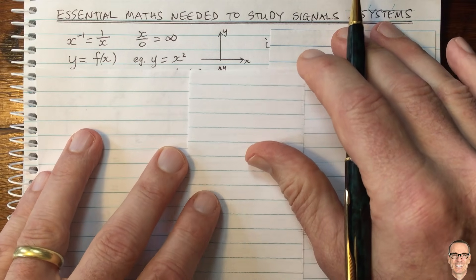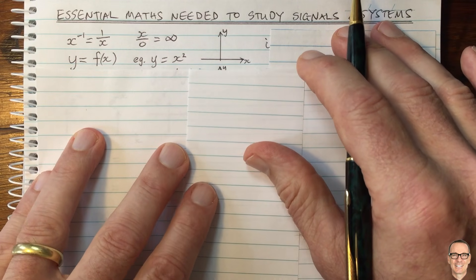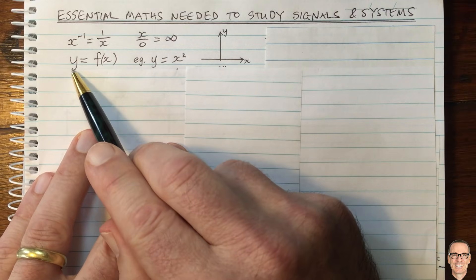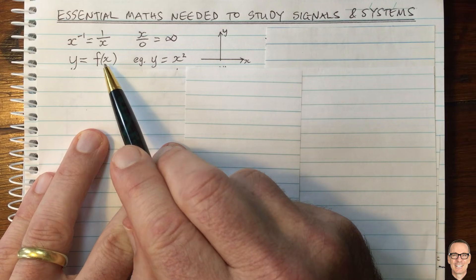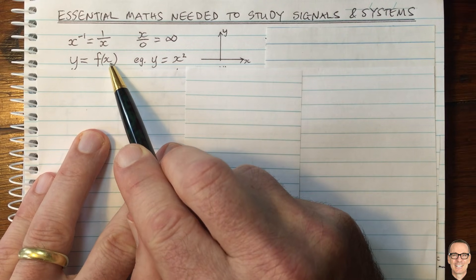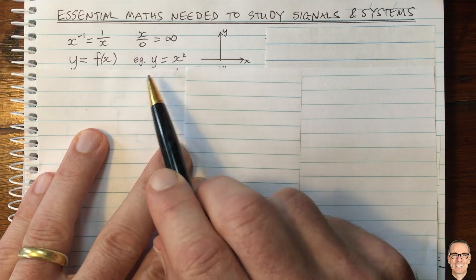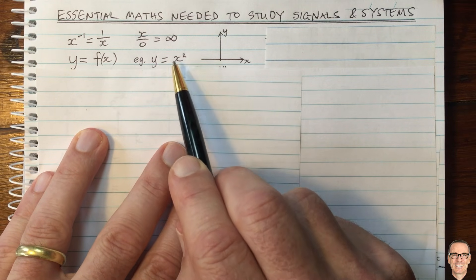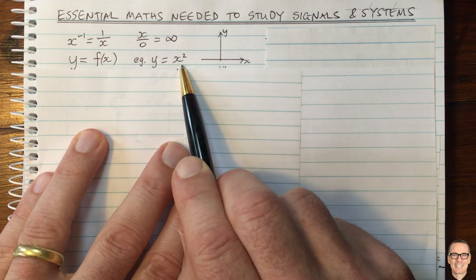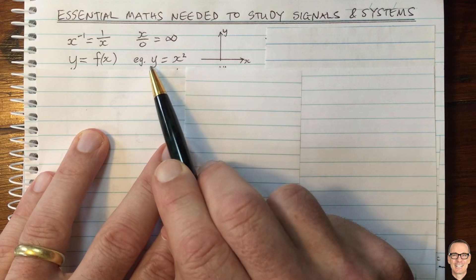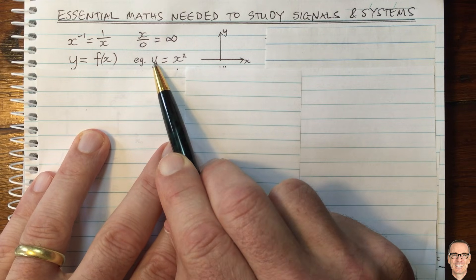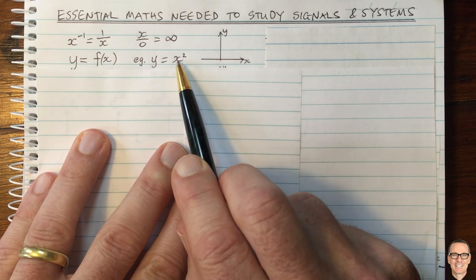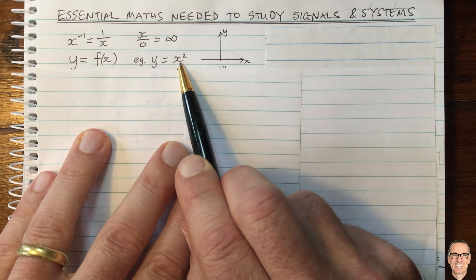Another important thing is the concept of functions. Here we have a function — y can be written as a function of x. For example, y equals x squared. That is a functional representation. You can think of x as the input and y as the output of this function. The function is squaring the value of x.